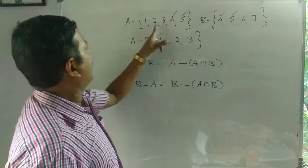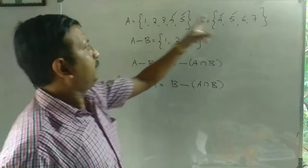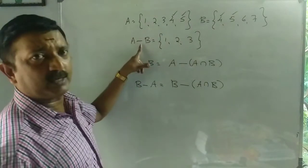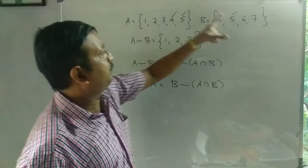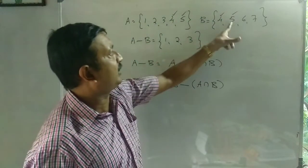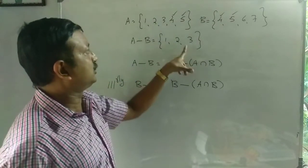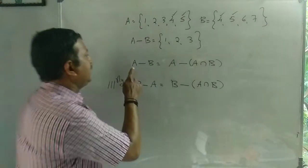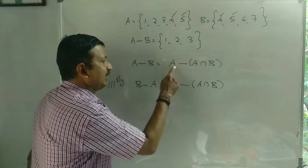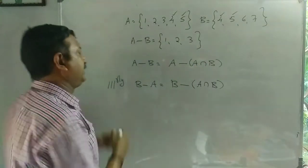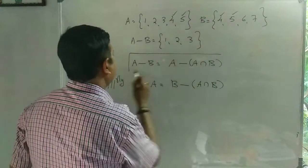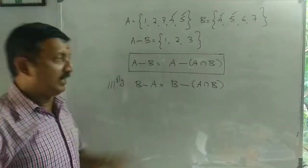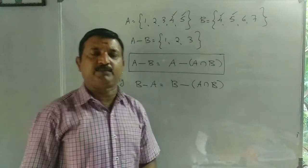A is equal to {1, 2, 3, 4, 5}. B is equal to {4, 5, 6, 7}. A minus B is equal to {4, 5, 6, 7}. A minus B equals A minus A intersection B. We've learned this chapter.